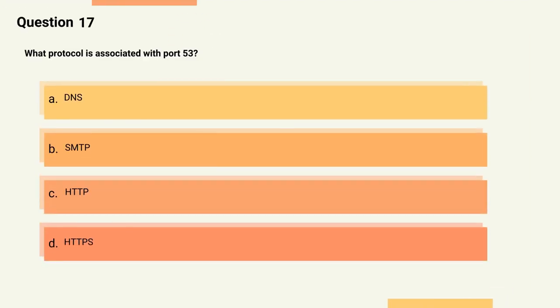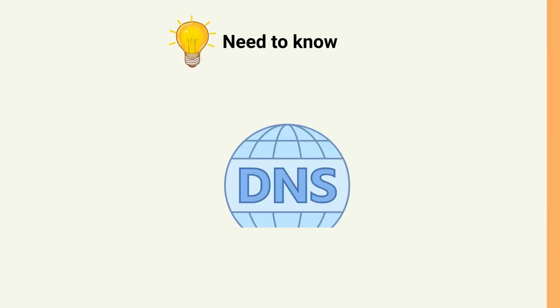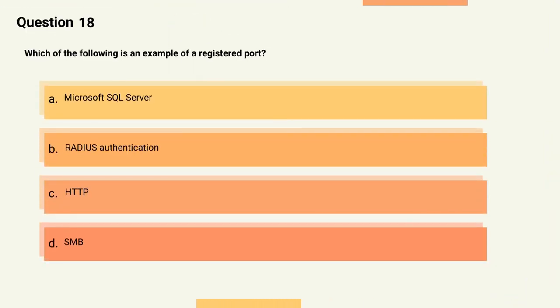Question 17: What protocol is associated with port 53? Options: A) DNS, B) SMTP, C) HTTP, D) HTTPS. The correct answer is Option A, DNS. Explanation: Port 53 is associated with the Domain Name Service (DNS) protocol.